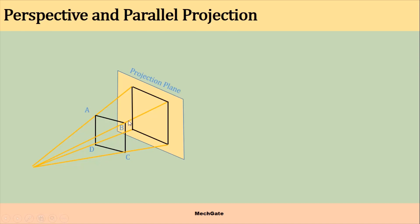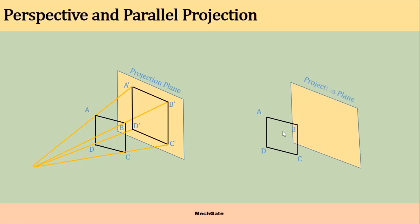We cannot exactly find the true size of the object from perspective projection. This is called perspective projection. In the case of parallel projection, the projection lines are parallel to each other and emerge from an infinite light source. The projection lines are parallel to each other and projected onto the projection plane. In this case, we get a true shape and true size of the object. This is called parallel projection.